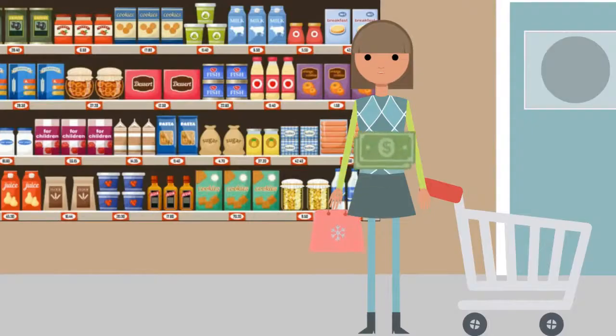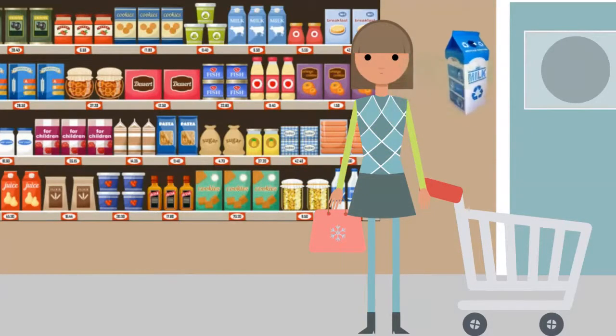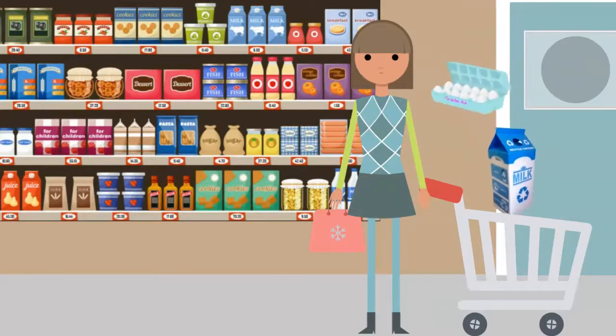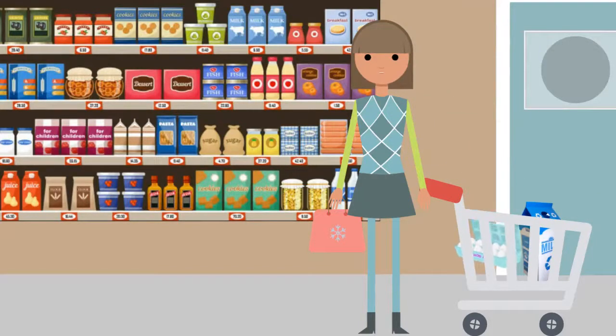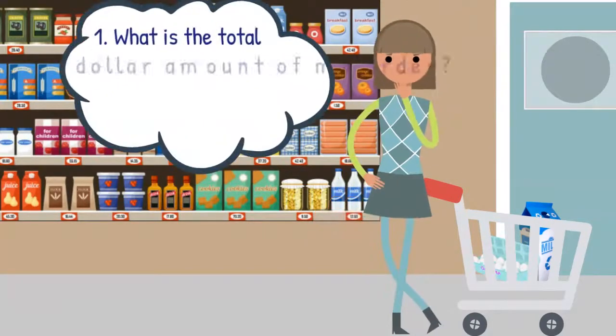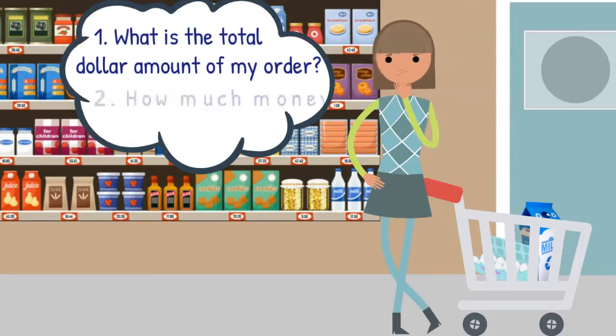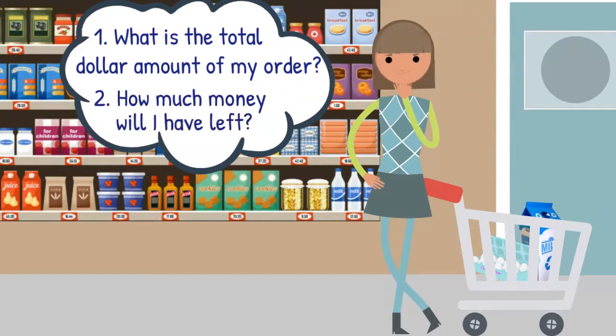I have $20 to spend. I need to buy milk, which is $3, and eggs, which are $5. First, what is the total dollar amount of my order? Next, how much money will I have left over after buying these things?